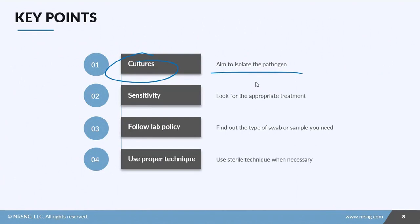The purpose of a culture is to isolate a pathogen and find out what's causing an infection. Sensitivities look at the appropriate treatment and figure out what type of medication or class of medication is going to help get rid of that pathogen. When you're unsure of what to do, follow lab policy and facility policy - that'll help you find out what sample you need for your patient. And lastly, make sure you're using proper technique. Use sterile technique when you are unsure or when you absolutely need to. Whether you're using clean gloves or sterile gloves, always opt for sterile technique in the event of a question. Make sure that you're not contaminating your sample and get that sent off to the lab.